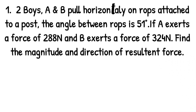This is the angle between the two boys A and B, pulling horizontally on ropes. The angle between the rope is 51 degrees. If A exerts a force of 288 newtons, then B exerts a force. Let's see how the force is acting.